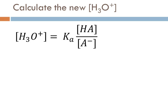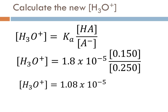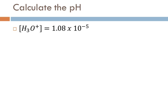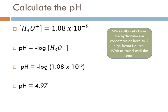Now we have the Ka, the weak acid concentration, and the conjugate base concentration. Substituting into the rearranged Ka expression: [H₃O+] = (1.8 × 10⁻⁵) × (0.150 / 0.250) = 1.08 × 10⁻⁵ M. Taking the negative log, pH = −log(1.08 × 10⁻⁵). Since we only know the hydronium ion concentration to two significant figures, we're allowed two decimal places. The final answer is pH = 4.97. This would have been a much more drastic change had we added 0.050 moles of sodium hydroxide to, say, a sodium chloride solution.